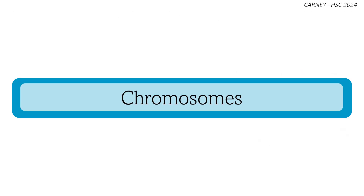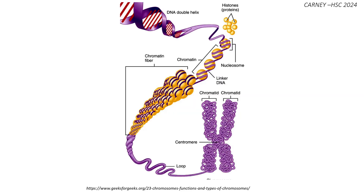Chromosomes are thread-like structures found in the nucleus of the cell. They are made up of DNA and proteins called histones that carry the genetic information necessary for all living organisms to grow, develop, function, and reproduce. The number of chromosomes in an organism is species-specific. For example, humans have 23 pairs of chromosomes, while a fruit fly has four pairs of chromosomes.